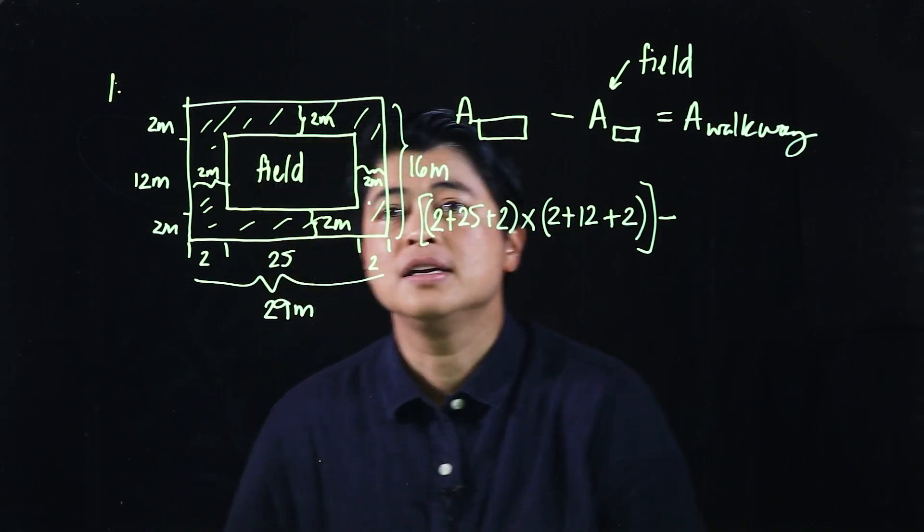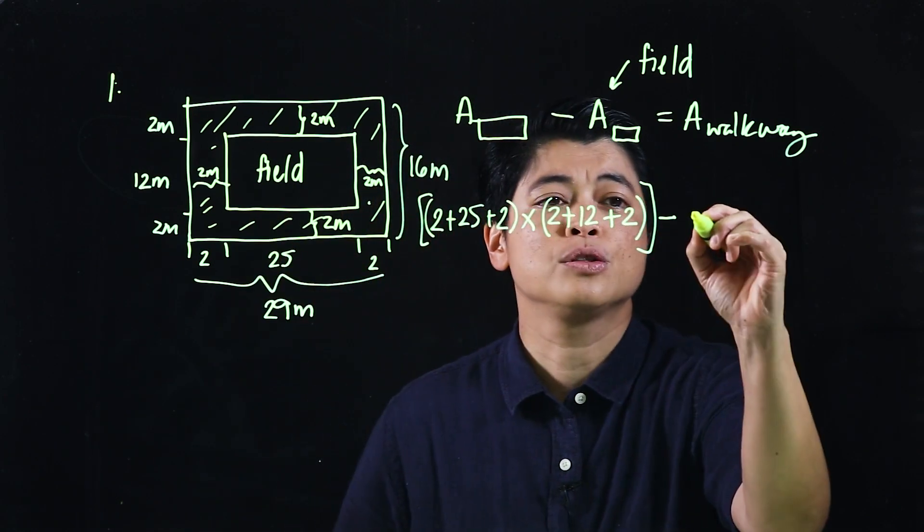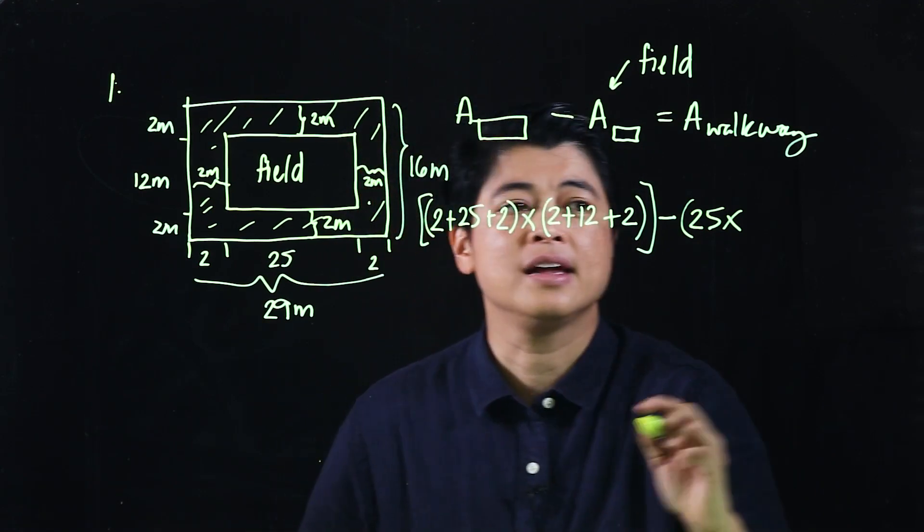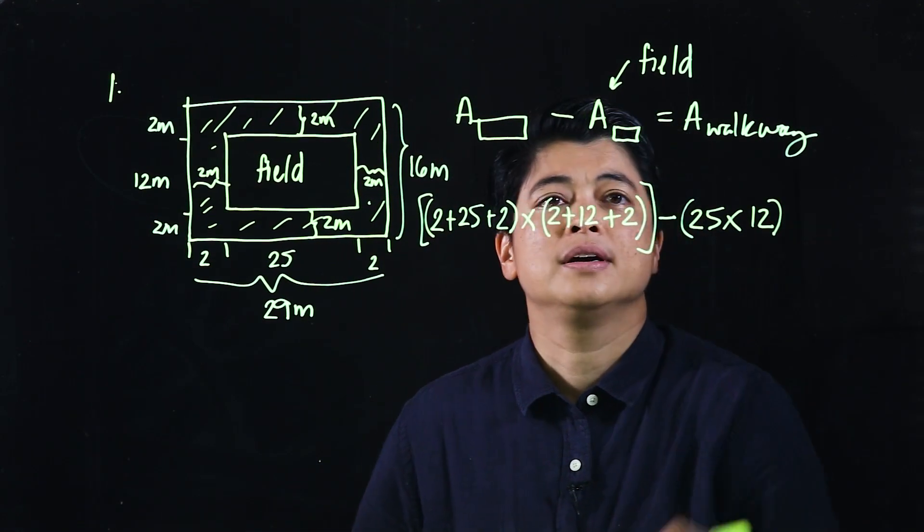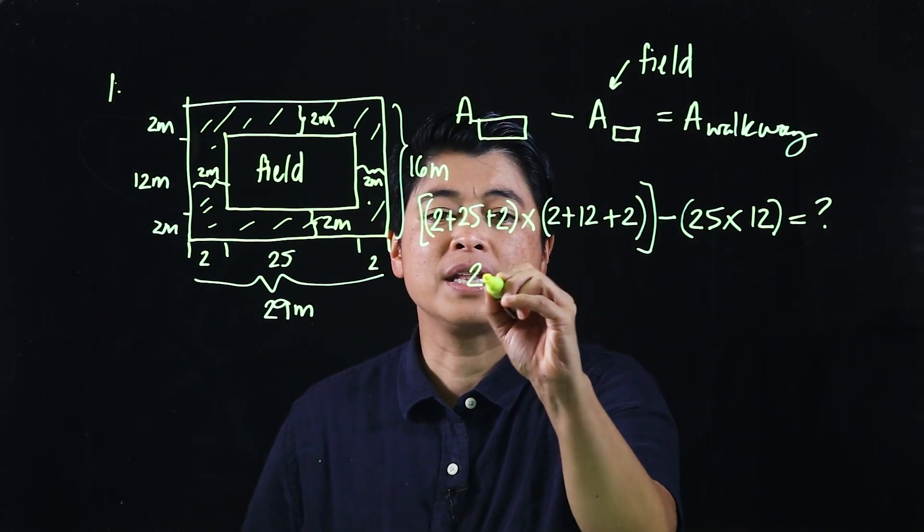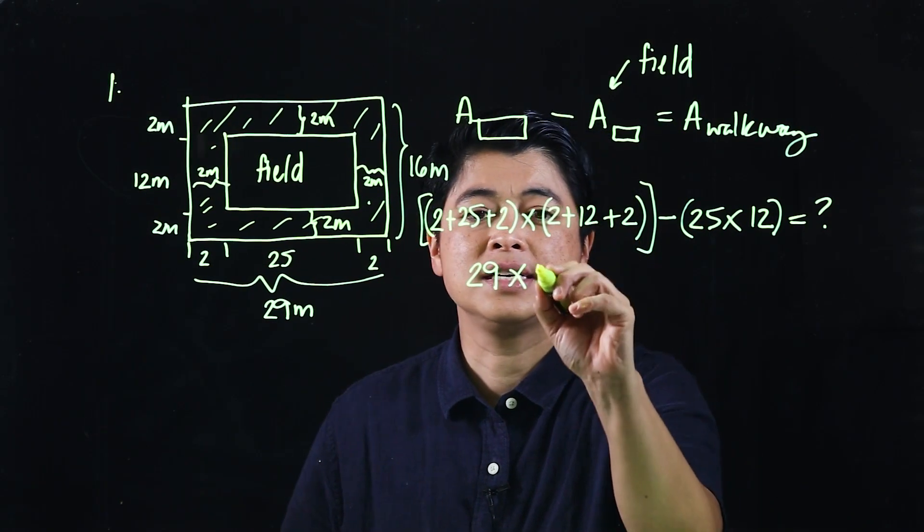Then I'm gonna subtract the area of the field. The area of the field is technically the length is 25 and the breadth is 12. So this is 29 times 16.